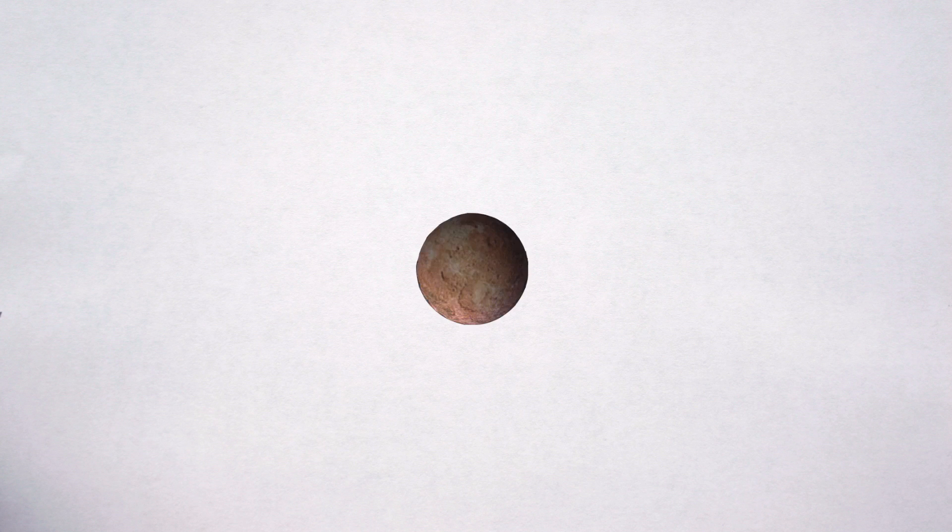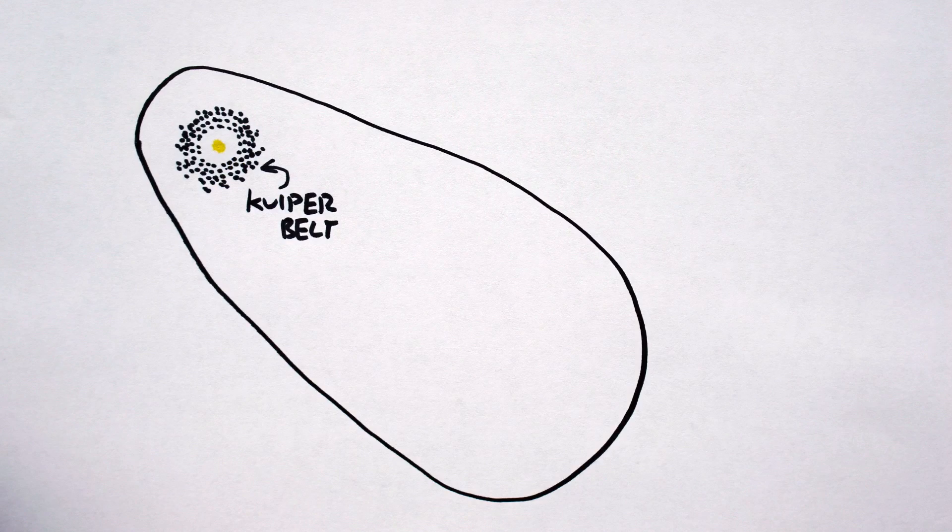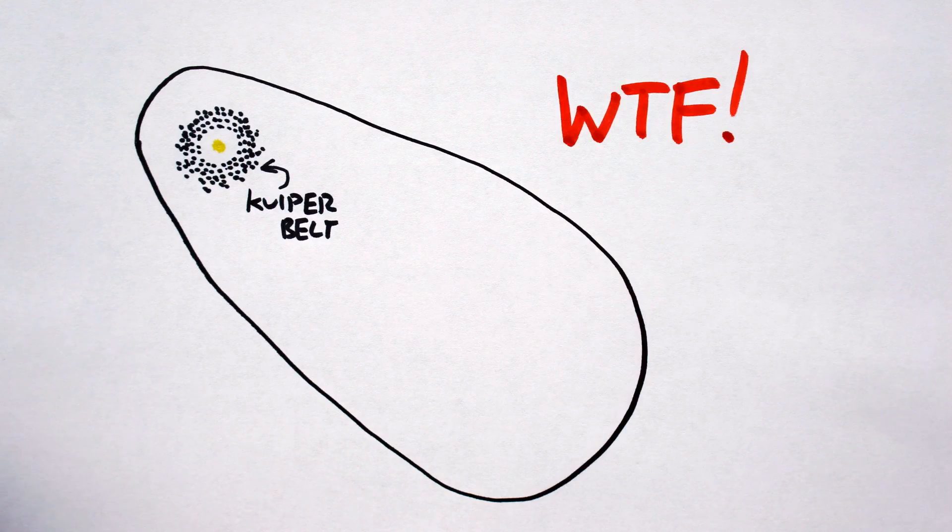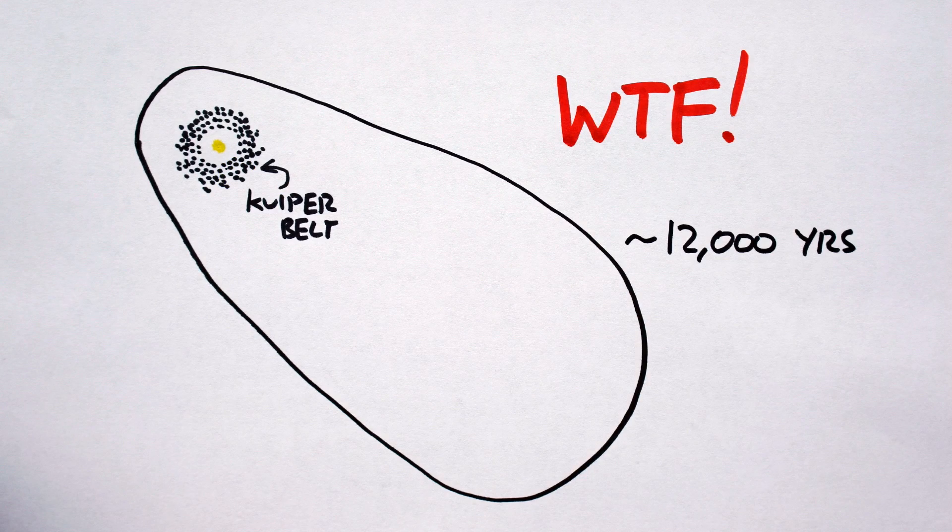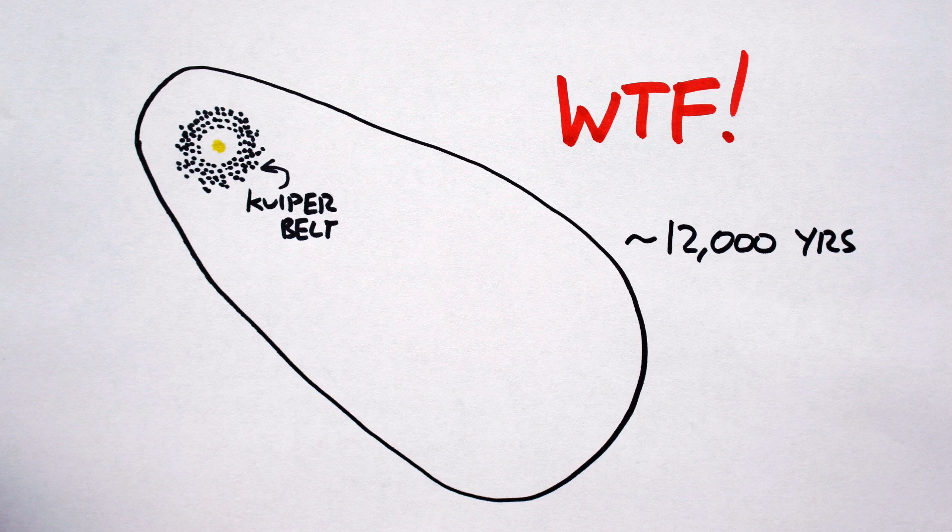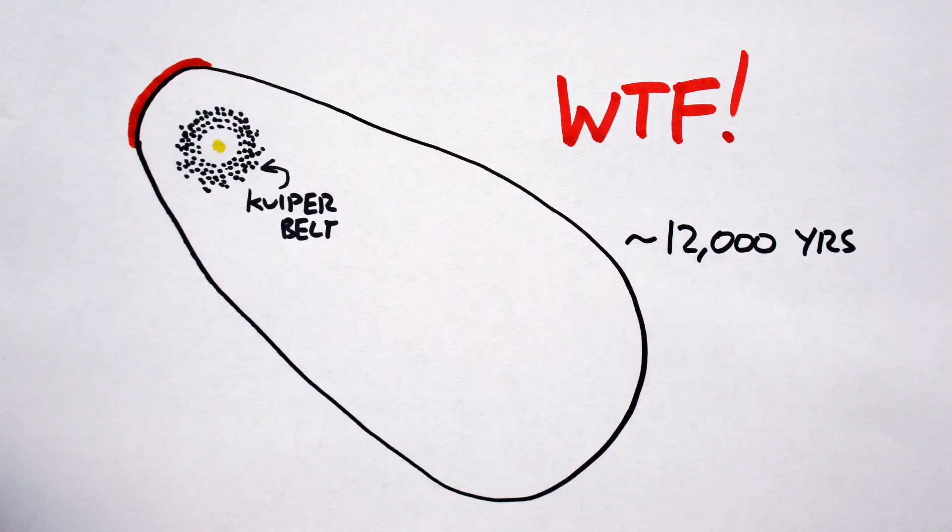Meet Sedna. Although not strictly a dwarf planet, it does have a lot of dwarf planet properties. One being a crazy orbit, and boy, are we talking crazy. Here is the Kuiper Belt, and here is Sedna's orbit. Madness. It takes 12,000 years to orbit the sun, and out of those 12,000 years, Sedna is only visible to us for about 200 years. Shown in red here.